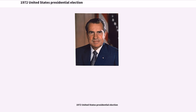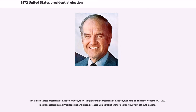The United States Presidential Election of 1972, the 47th quadrennial presidential election, was held on Tuesday, November 7, 1972. Incumbent Republican President Richard Nixon defeated Democratic Senator George McGovern of South Dakota.